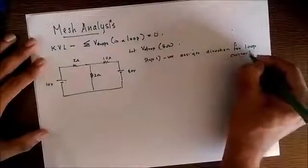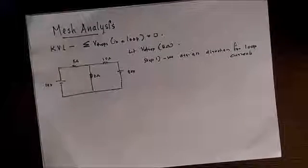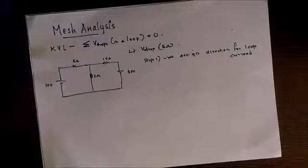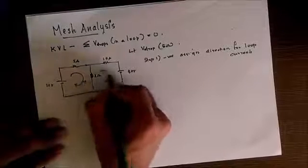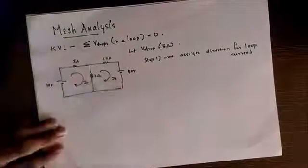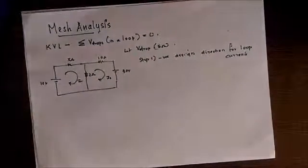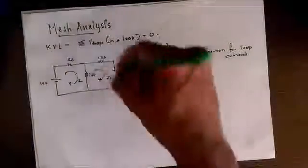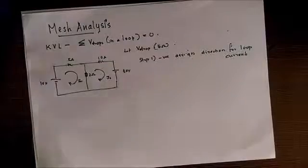We just have to assign arbitrary directions. In my case, I always take clockwise directions for current like this: I1 and I2. Just take it for all loops clockwise direction so that we don't have much confusion. If the current is in the opposite direction, we ultimately get a negative sign in the answer, so we can know it's in the opposite direction.